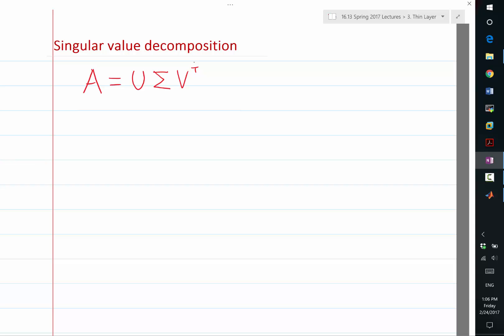And three, in eigenvalue decomposition, the U and U inverse can be pretty arbitrary matrices. But here, U and V have to be orthonormal matrices.